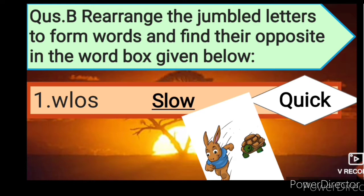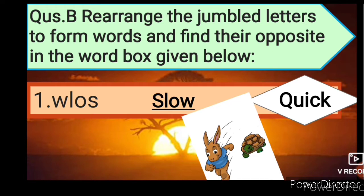First is W-L-O-S. After rearranging we will get S-L-O-W: slow. And as we have to write the opposite of this word, the opposite of slow is quick.